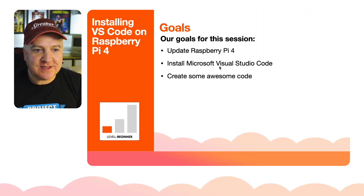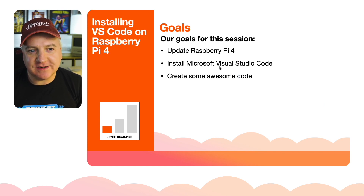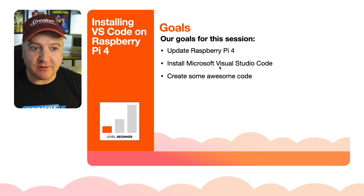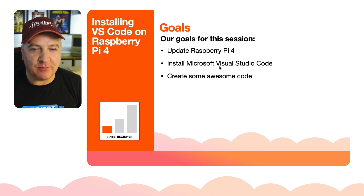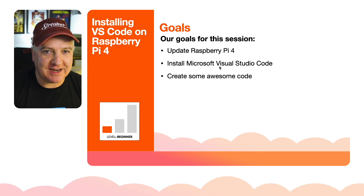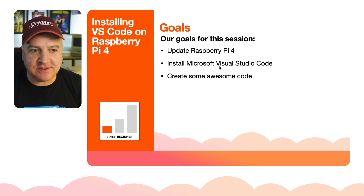The goal of this session is quite simple: we're going to upgrade our Raspberry Pi 4 OS, update the package manager, install Microsoft Visual Studio Code — which is really easy to do — and then create some awesome code. I would say this is beginner level; it's quite easy to do.